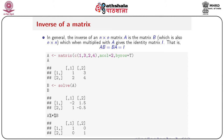In general, the inverse of an n by n matrix requires a square matrix. The inverse of an n by n matrix A is another matrix B, also of n by n order, which when multiplied by A gives the identity matrix I. That is, if B is the inverse of A, then A times B or B times A should give you the identity matrix.